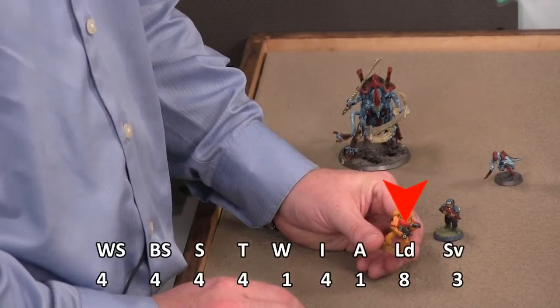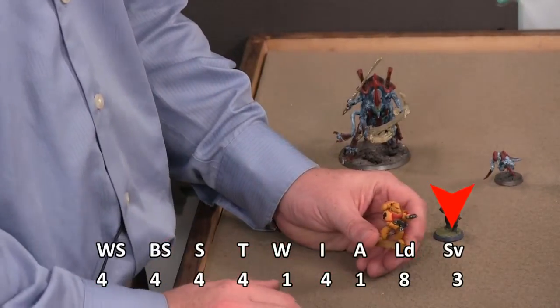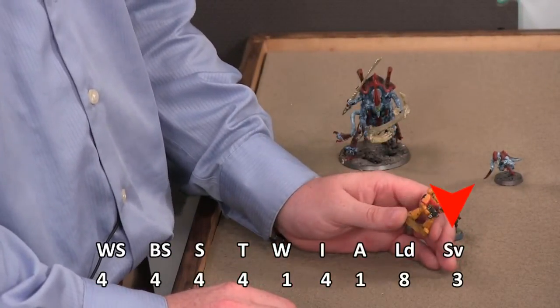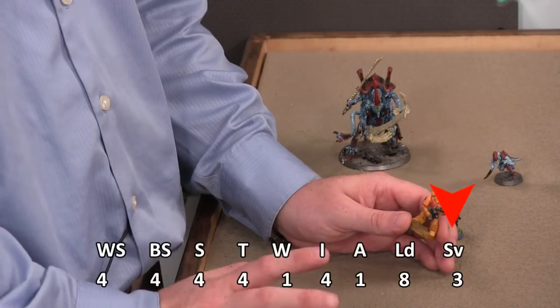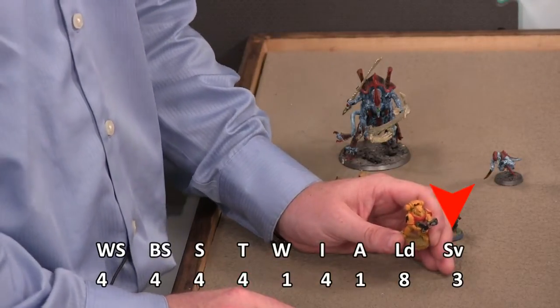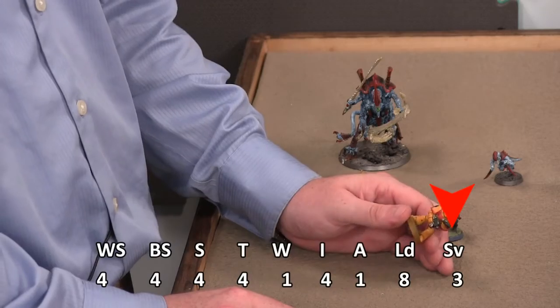Armor save is three. He's got a good armor save. Three is a very good armor save. You can only go to a two, so he's one away from perfect as far as that's concerned. So let's see how he compares.